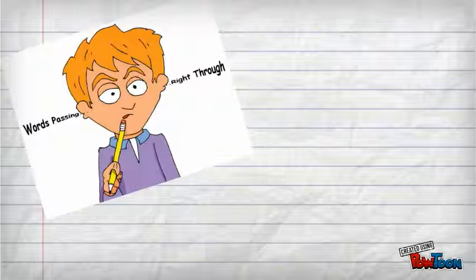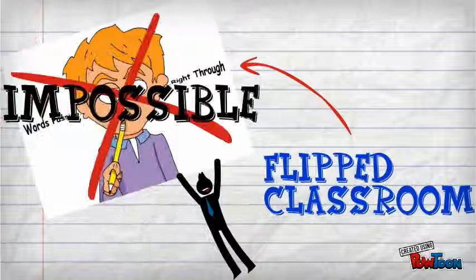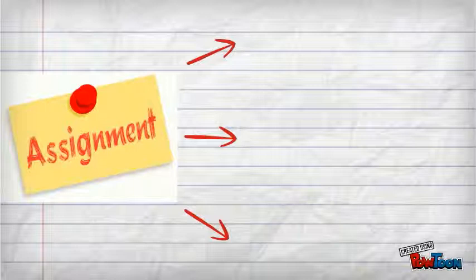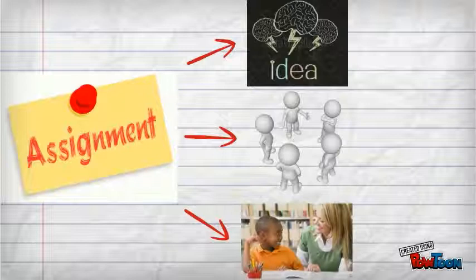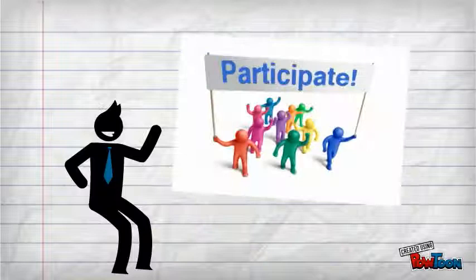In the flipped classroom, passive learning is quite impossible. During class, students should do at least one or more activities to finish their assignment. Brainstorming, discussion, writing, or even asking a question of teachers. As a result, the flipped classroom makes students participate in class actively.